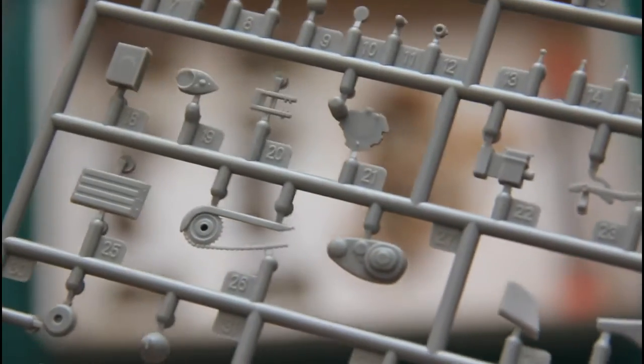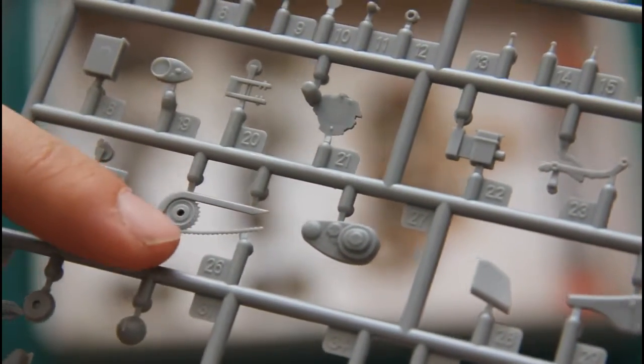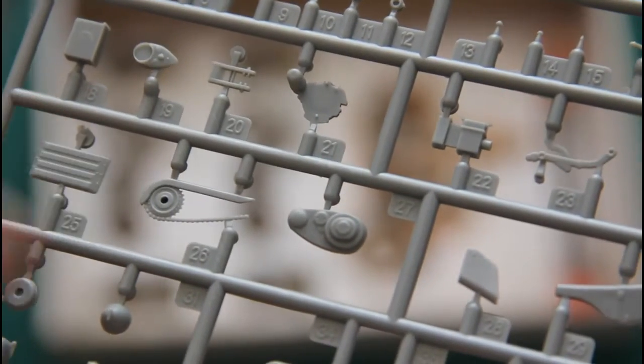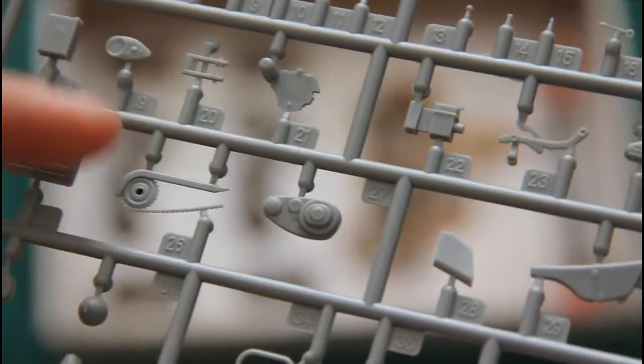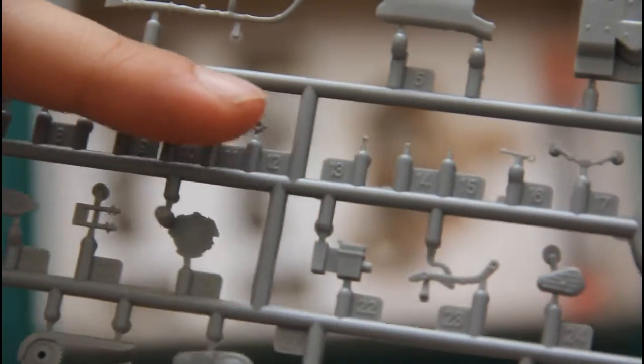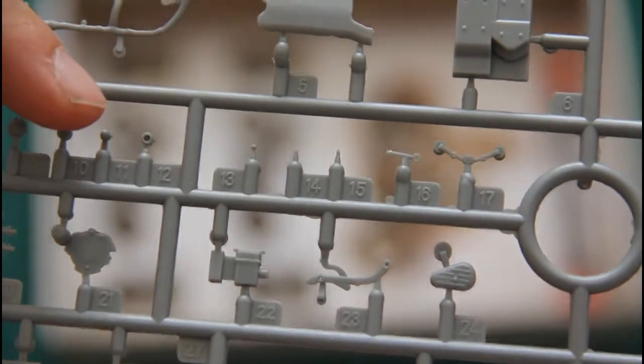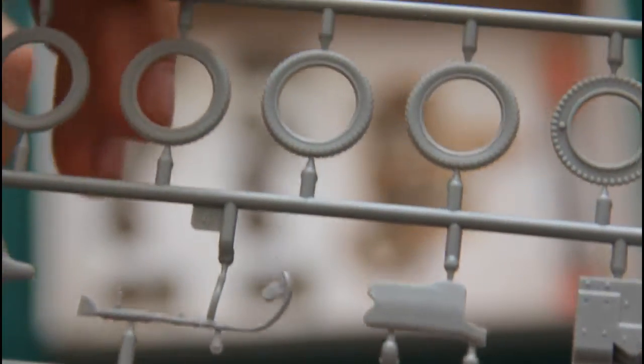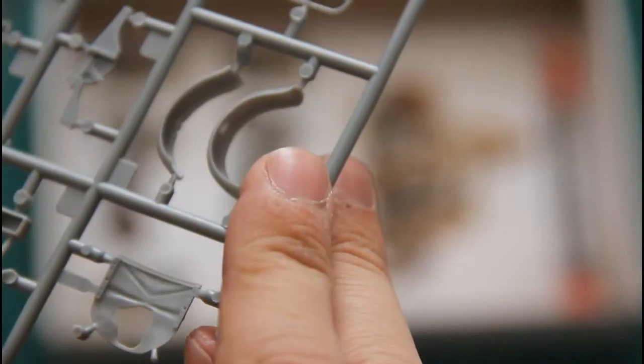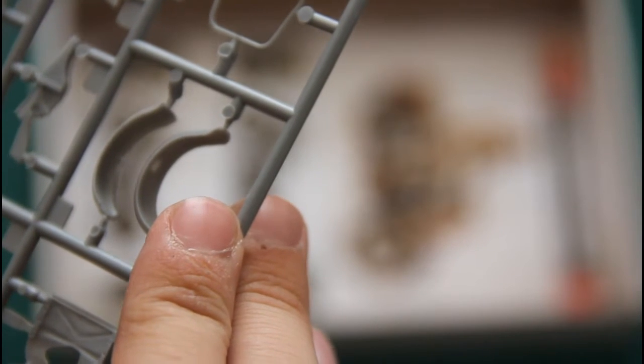I think it's good because detailization will be much better. The manufacturer could mold, for example, this chain separately so that it will be even more detailed, and you don't have to use PE parts to replicate this element. Here you can also see some minor parts which should be placed on the bike. And here are the wheels, which will be assembled from two parts.